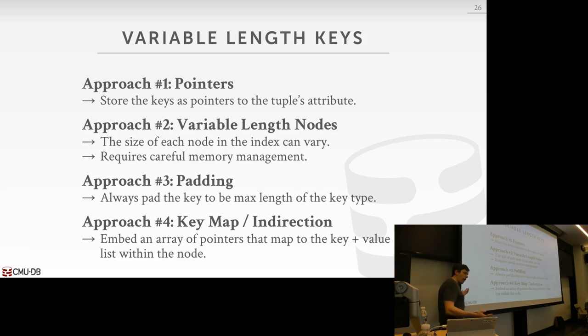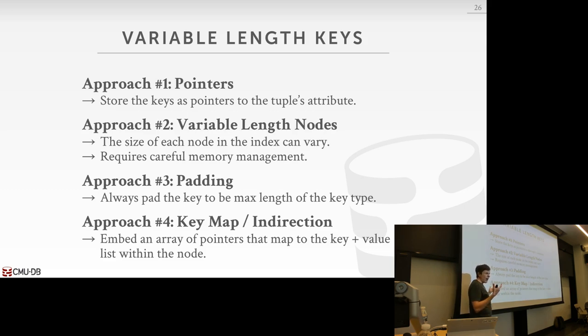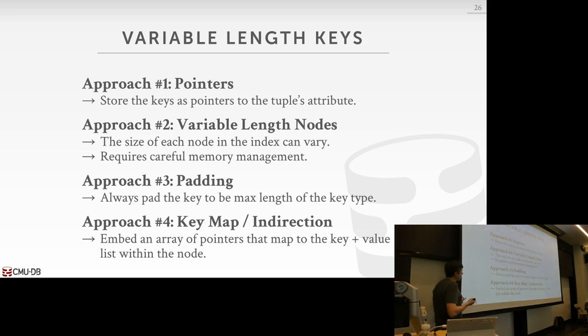Now we want to talk about how we actually handle variable-length keys. Everything shown so far assumed the key is fixed length and the value is always fixed length. In practice, the values will always be fixed length. There are four different ways we can handle this.